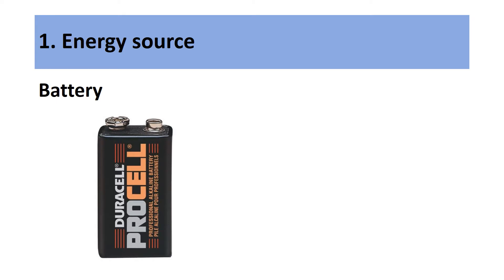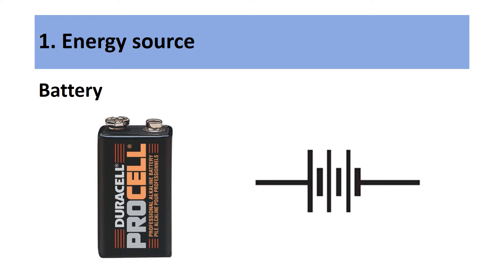Our next energy source is a battery, and it works the same way as a cell — stored chemical energy is converted into electrical energy once placed in an electrical circuit. The symbol for a battery consists of alternating longer and shorter lines: longer, shorter, longer, shorter, longer, shorter, with the wire connecting on either end. Please make sure there are no gaps between the battery and the wire.